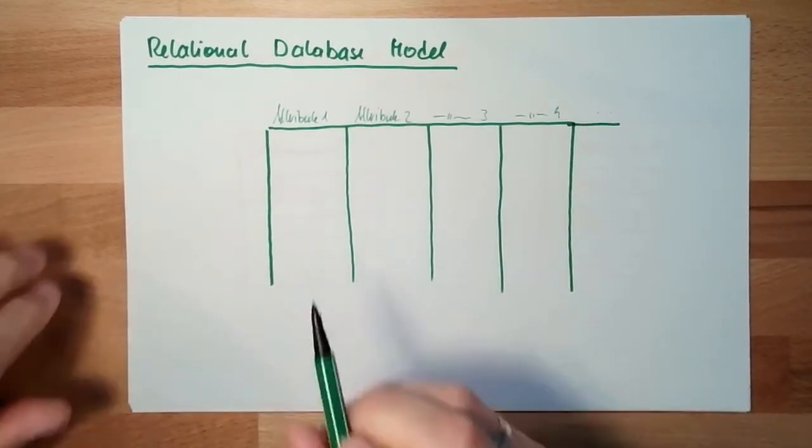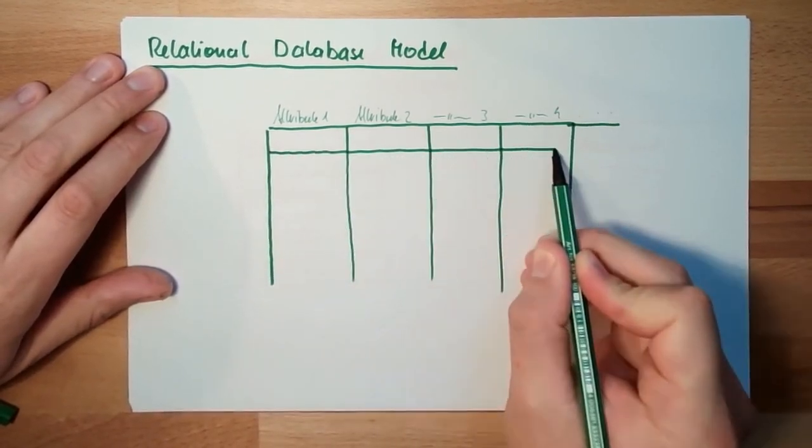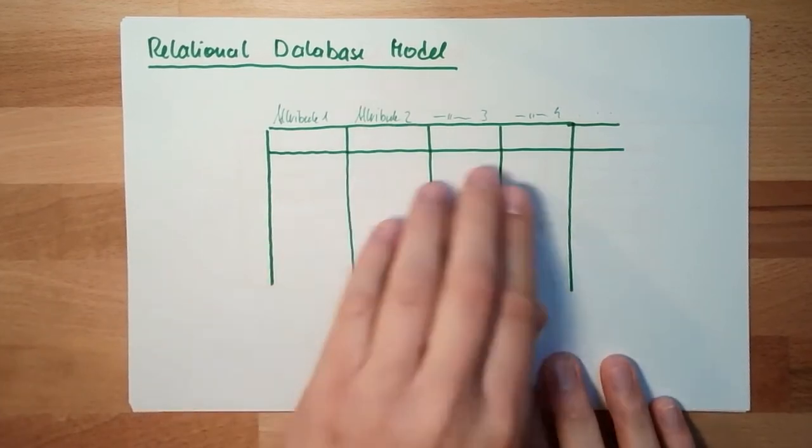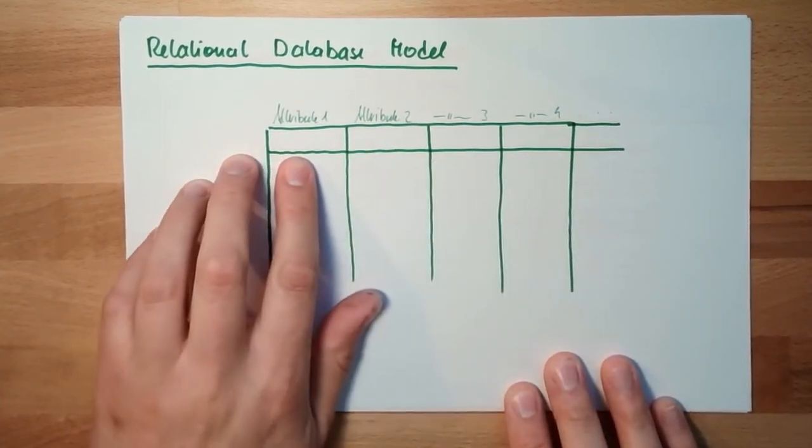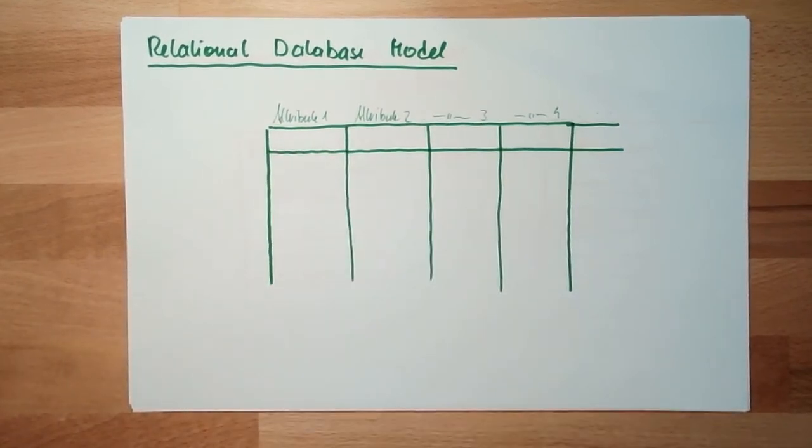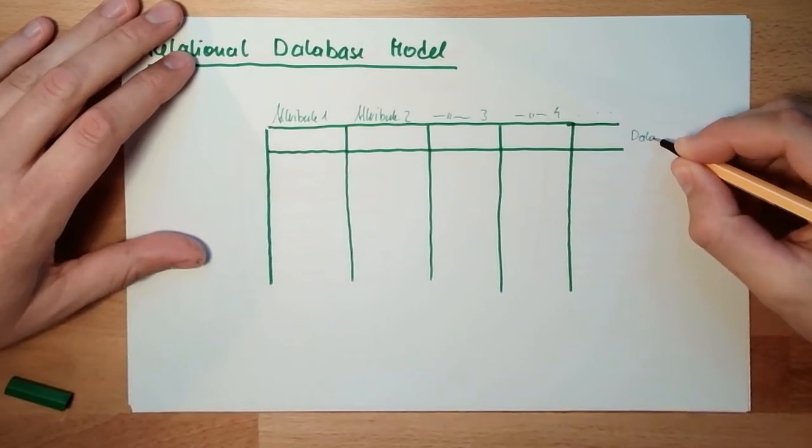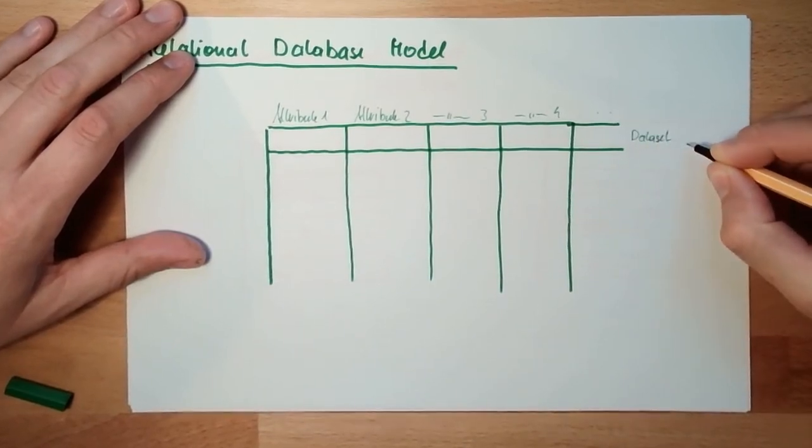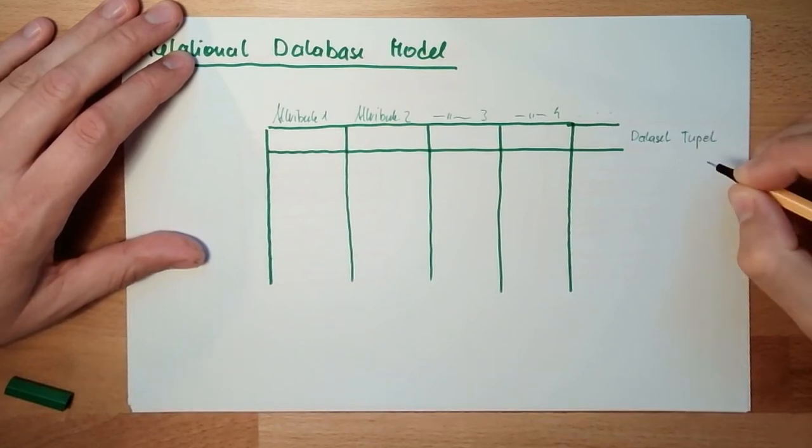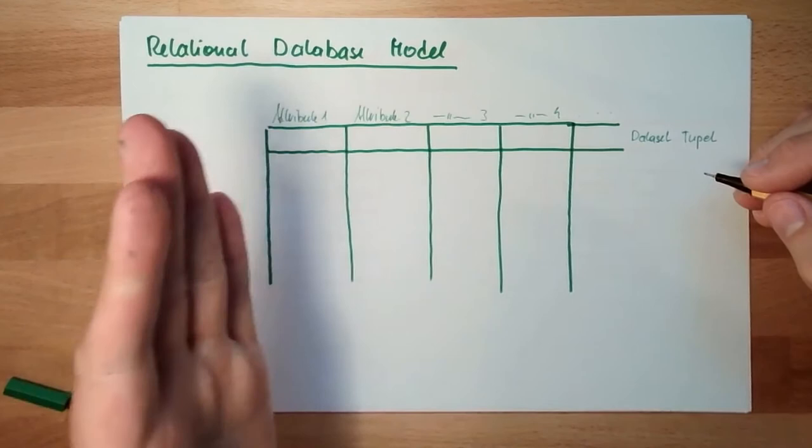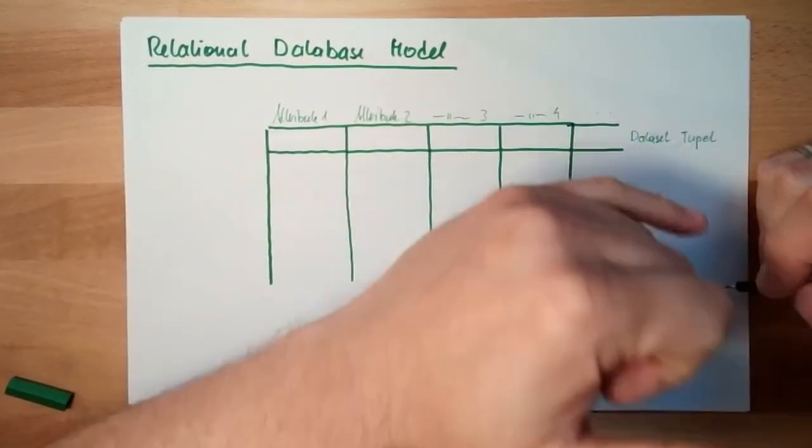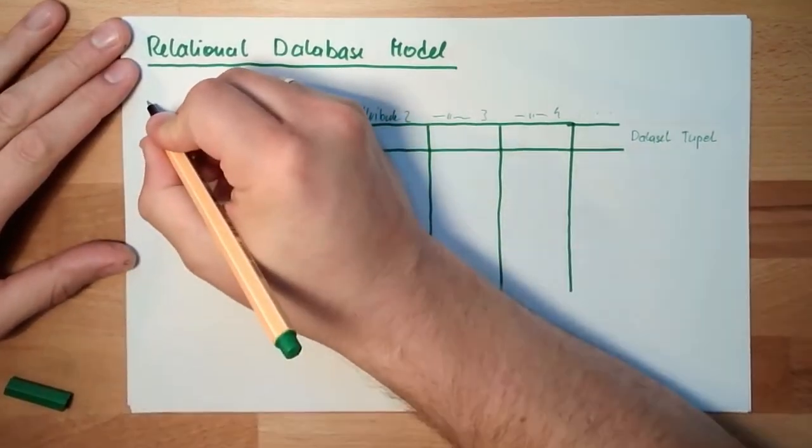Every line is one data set, one set of data. This is a data set, record, or tuple. Line is column, column is attribute. And all attributes which belong together is one data set. And the table has a table name or relation name.